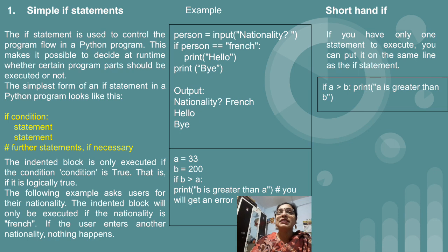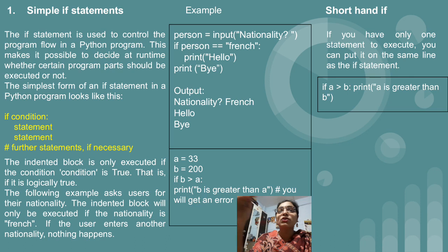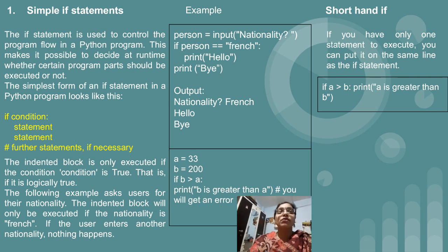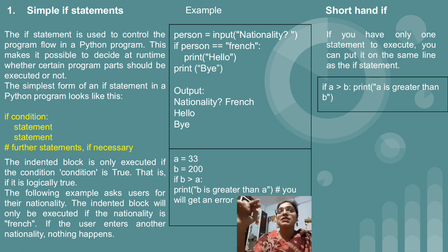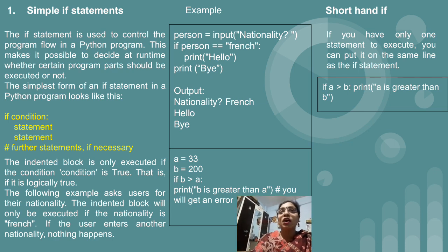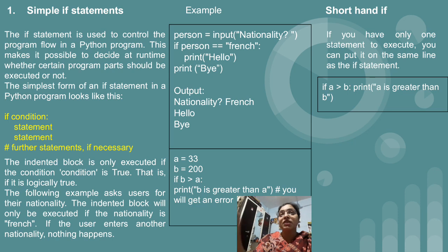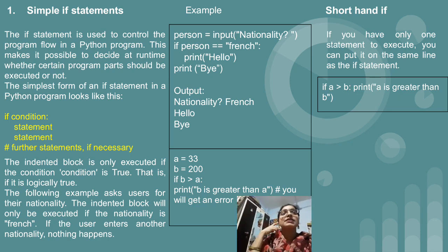If you notice the syntax, the statement inside the if block is indented — it starts below the if keyword, not at the same level. The statements with a tab space before them are part of the if block. Once you leave that indentation, if you start writing code exactly aligned below the if keyword, then it is considered outside the if statement. So that is your simple if statement, shown with an example in the square bracket.